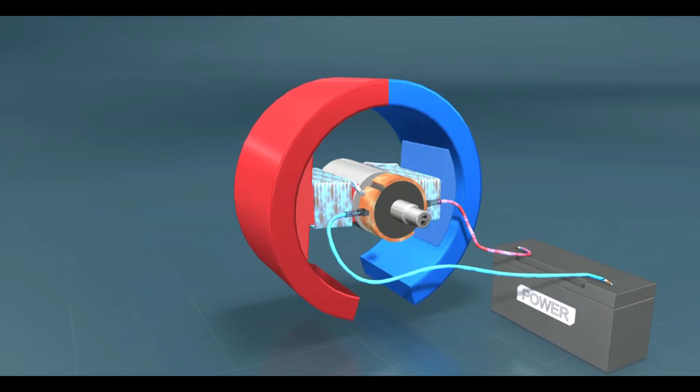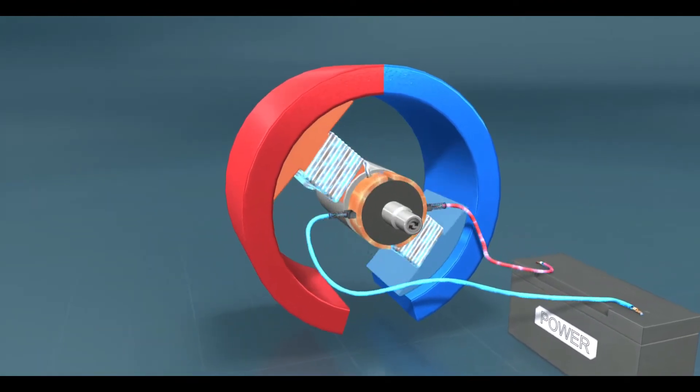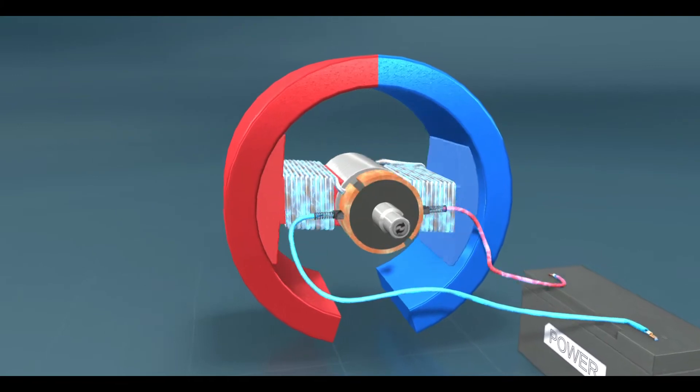There are two main types of electric motor: direct current, or DC, and alternating current, or AC.